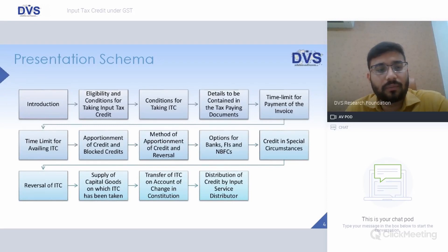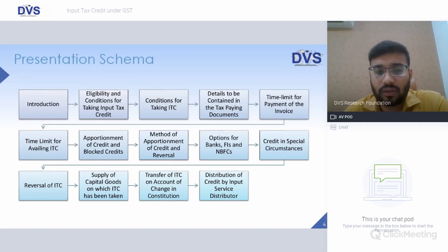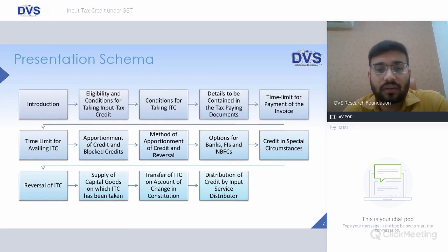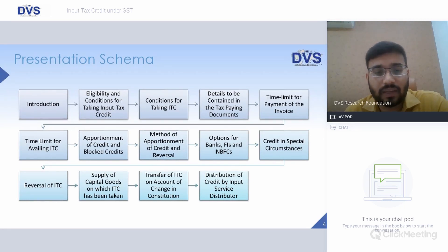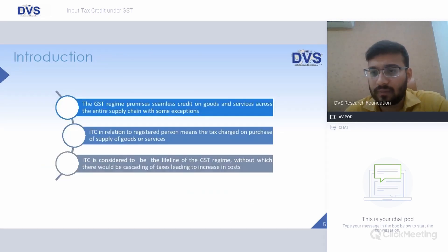The schema for the day covers: eligibility and conditions for taking input tax credit, details required in tax paying documents, time limit for payment of invoice, time limit for availing ITC, apportionment of ITC and blocked credits, method of apportionment, options for banks and NBFCs, credit in special circumstances, reversal, supply of capital goods on which ITC has been taken, transfer of ITC on account of change in constitution, and distribution of credit by ISD.